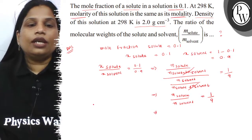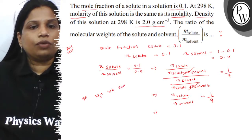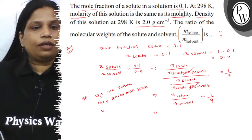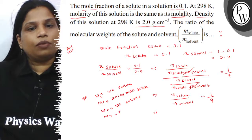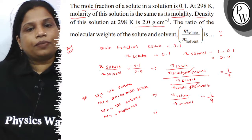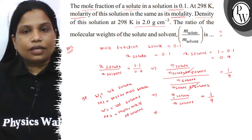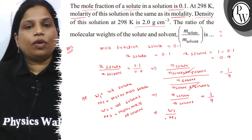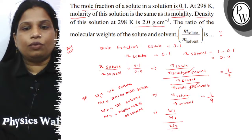Now, if W1 is the given weight of the solute and M1 is the molar mass of the solute, and W2 is the weight of the solvent and M2 is the molar mass of the solvent, then the number of moles of solute equals W1 divided by M1, and the number of moles of solvent equals W2 divided by M2.